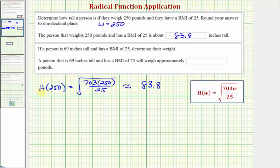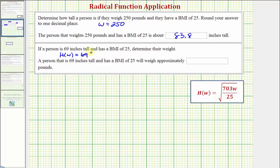Now for the second question. If a person is 69 inches tall and has a BMI of 25, we want to determine their weight. We're given the height, so we know H of W equals 69. We want to determine their weight, or W. So we'll substitute 69 for H of W and then solve for W.